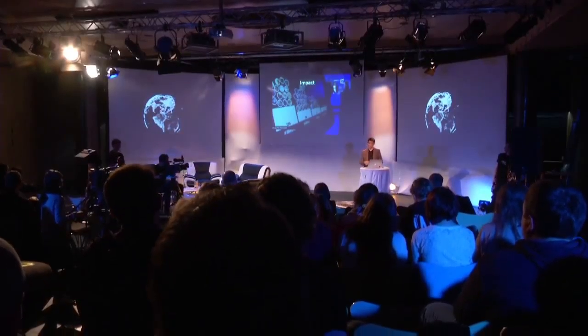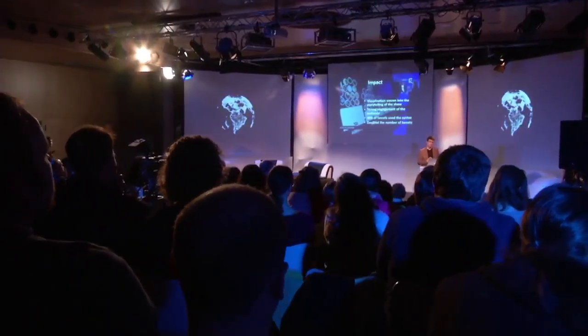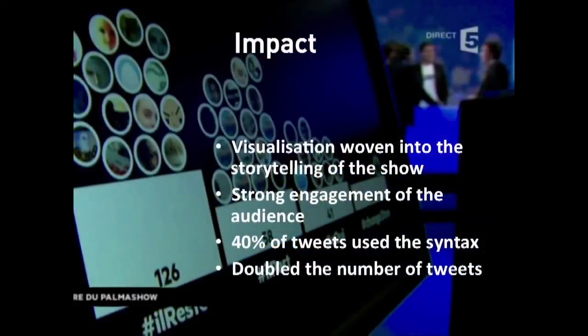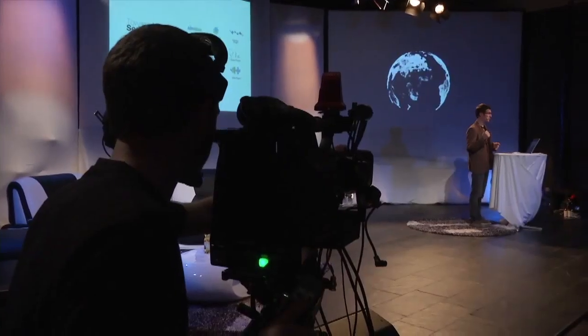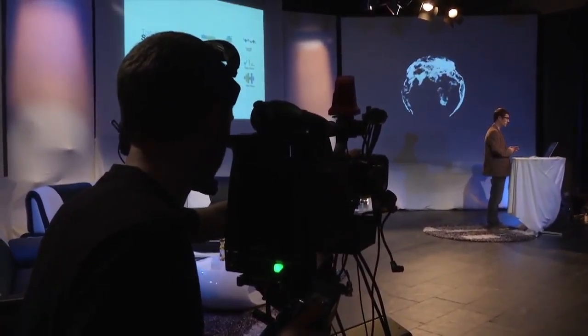Bubble TV also had an impact on the audience online: half of all the people who actively tweeted, and 40% of tweets used the provided hashtags. For this show, the number of tweets was multiplied by two compared to the previous season. Bubble TV was on air for this one pilot since season two never started. However, it was used by France Television in their promotional video for innovation. Afterwards, researchers implemented a generic JavaScript library for dynamic visualization from any data stream — this project, called Visual Sedimentation, was awarded Best Poster at InfoViz 2012 and published as a long paper at Viz 13.